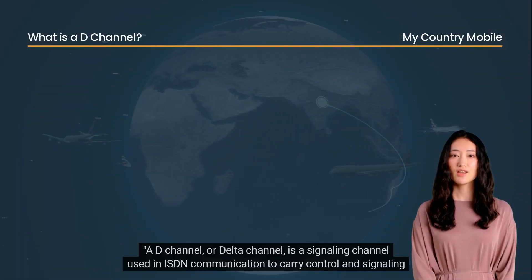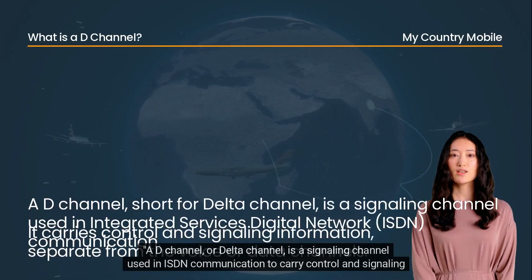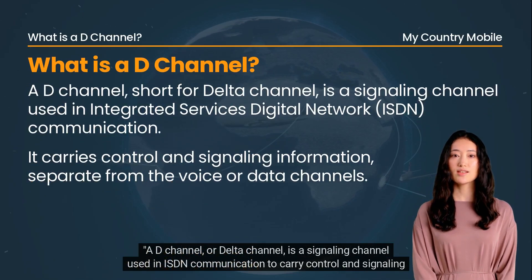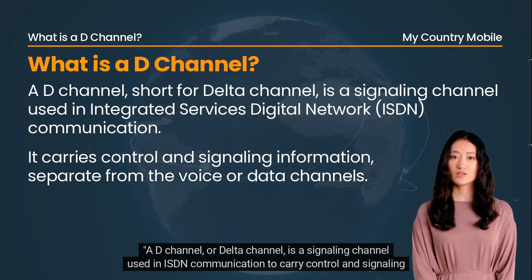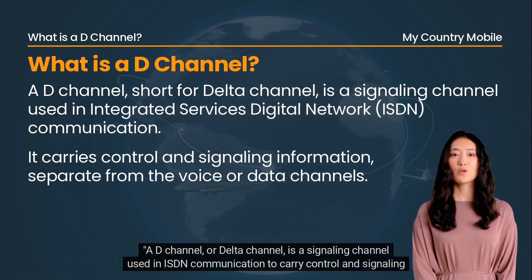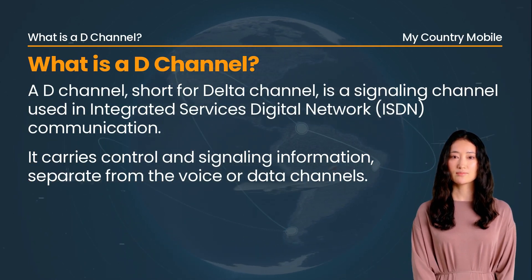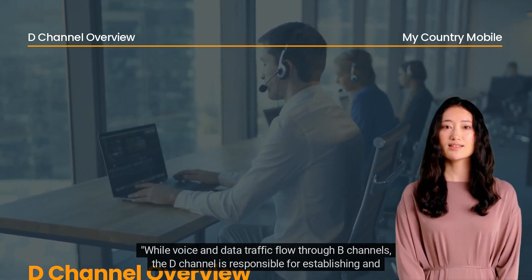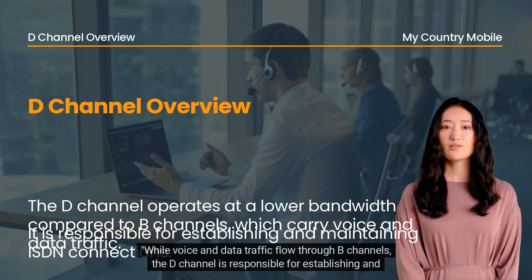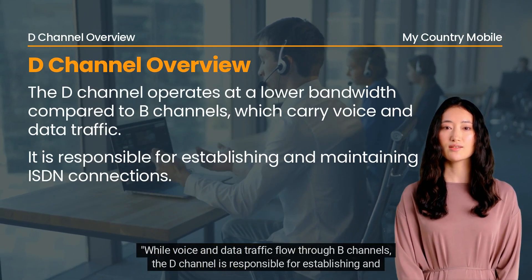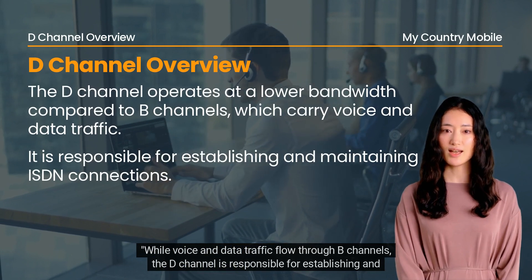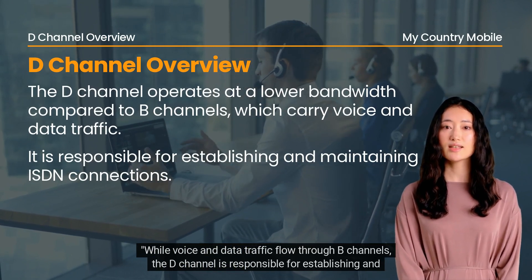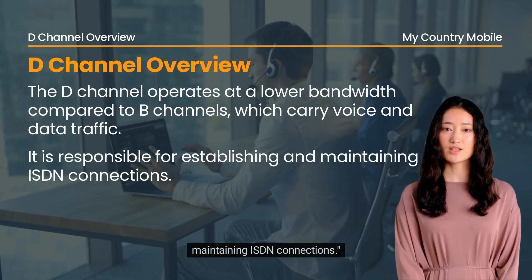A D-channel, or delta channel, is a signaling channel used in ISDN communication to carry control and signaling information. While voice and data traffic flow through B-channels, the D-channel is responsible for establishing and maintaining ISDN connections.